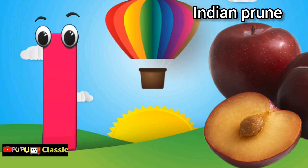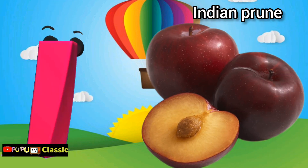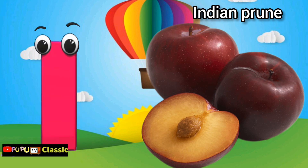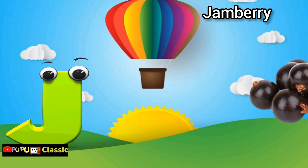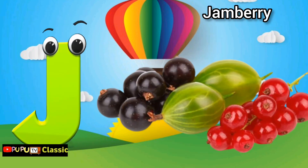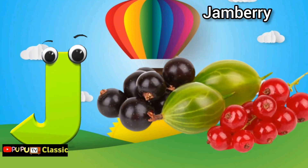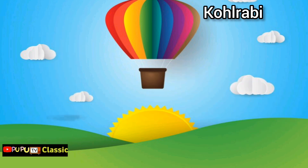I is for Indian prune, Indian prune. J is for jamberry, jamberry.